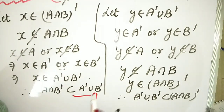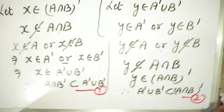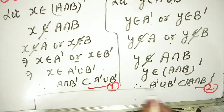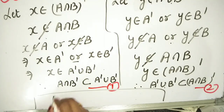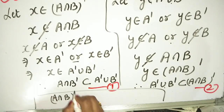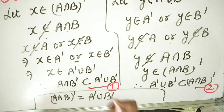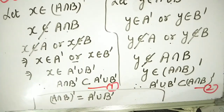So A complement union B complement is a subset of A intersection B complement. This was number 1, this was number 2. From 1 and 2: A intersection B complement equals A complement union B complement. I have proved this — I hope you have understood.